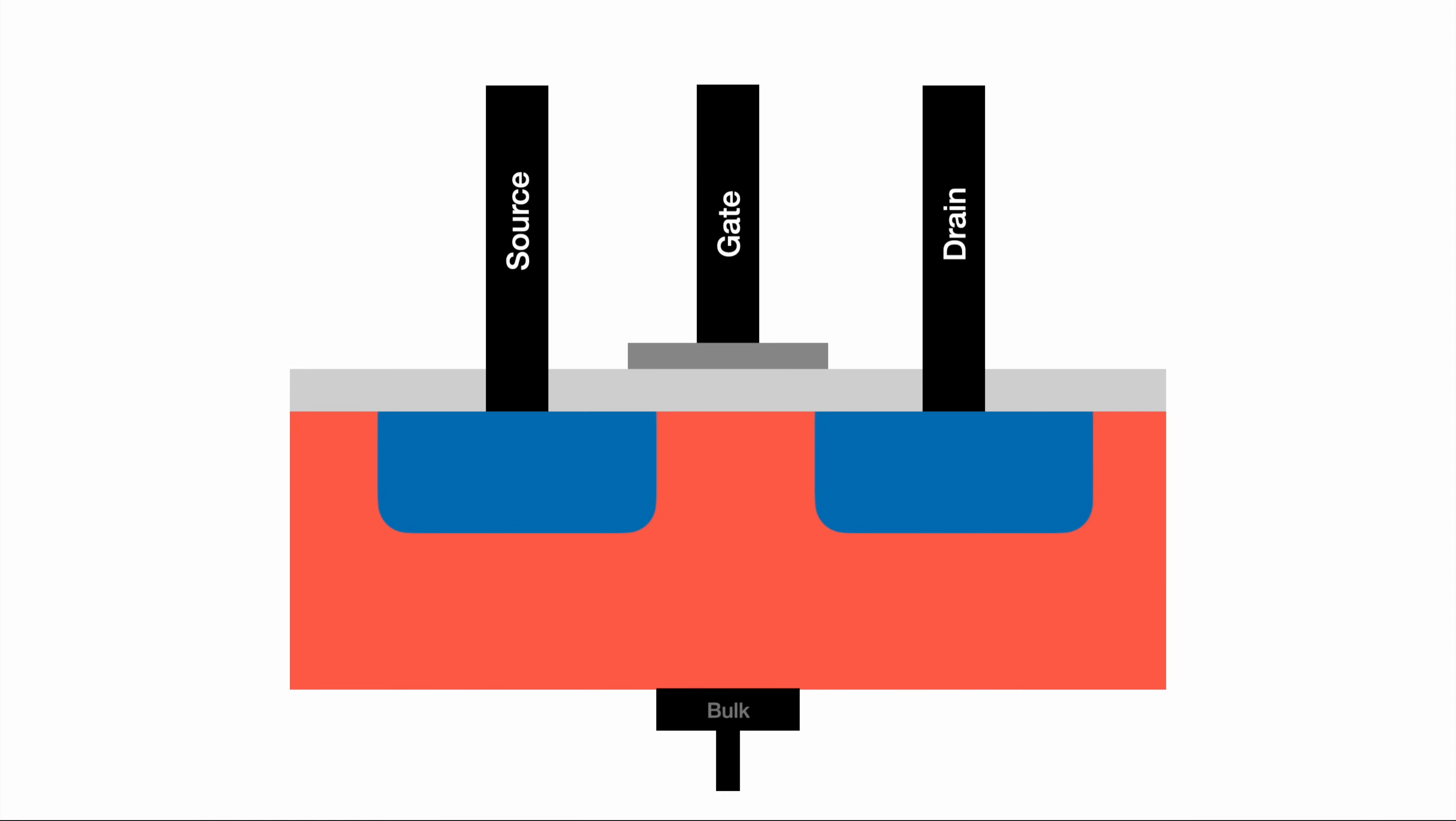At the bottom we have the bulk connector, which is not so important for our simple overview. With the source, drain, and gate enabling connection between them, we've discovered the switching behavior of the MOSFET.